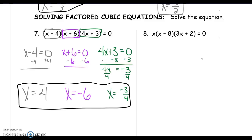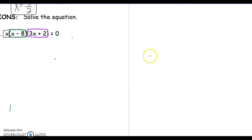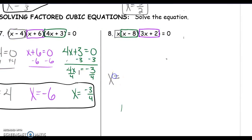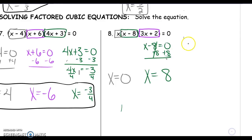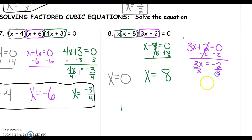Number 8: the first thing is x, the second is x minus 8, and the third is 3x plus 2. Set up three equations. For x equals 0, that's the first solution. For x minus 8 equals 0, add 8 to get x equals 8. For 3x plus 2 equals 0, subtract 2 to get 3x equals negative 2, then divide by 3 to get x equals negative 2 thirds. Our solutions are x equals 0, x equals 8, and x equals negative 2 thirds.